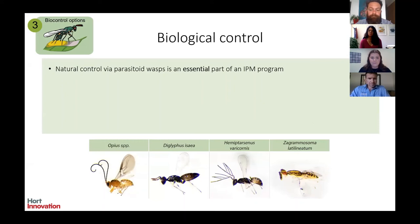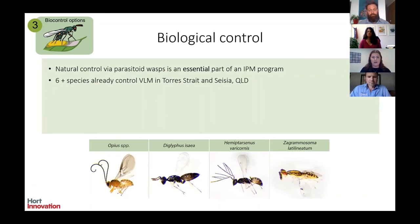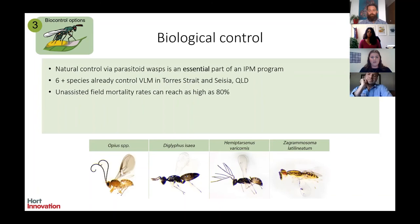A key finding from the project is biological control. Biological control will form an integral part of an integrated pest management program for leaf miner control. In the incursion front up in the Torres Strait and in Saibai, research has shown more than six species are already controlling leaf miner levels. Unassisted field mortality rates of vegetable leaf miner have been shown to reach as high as 80% in those natural environments. Australia also has more than 50 wasp species that could potentially control exotic leaf miners, including species well known for strong leaf miner management overseas.